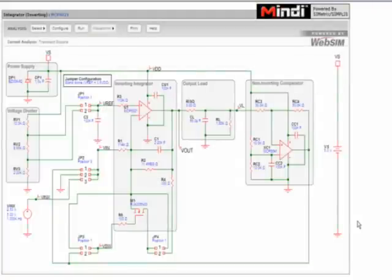Based on the inputs, Mindy generates the schematic with suggested resistor and capacitor values. The default jumper configuration for standalone, with the voltage reference of 0.5 VDD, will be used.